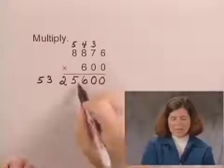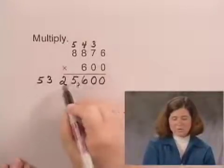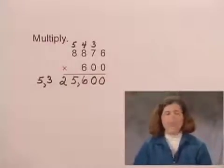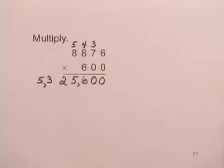And we separate with commas into periods. 3 digits and then 3 more and insert a comma. And we have the product 5,325,600.